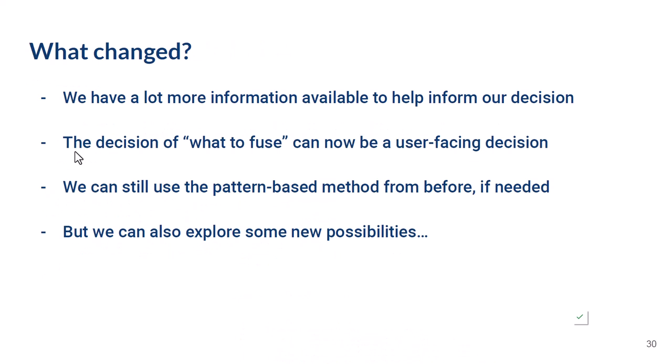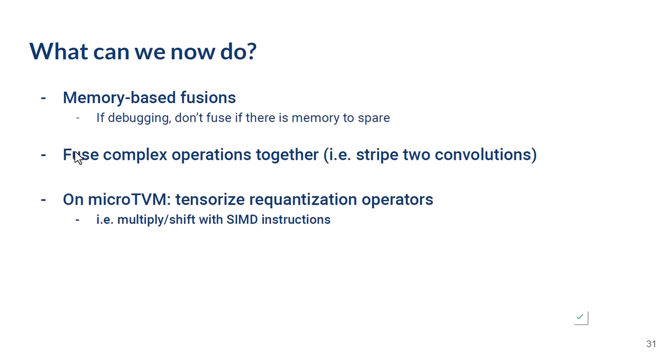What's changed now that we have Relax? At every step of the compilation pipeline, passes have a lot more information to inform their decisions. In the fusion case, the decision of what to fuse can now be a user-facing decision — it could be implemented by an accelerator vendor in a way that makes sense for their accelerator. Or we can still fall back on the pattern-based method if needed. We can also explore new possibilities: for example, if we're debugging a fused operator and think one of three things fused together is broken, we can now selectively decide not to fuse certain operators to help with debugging — something previously impossible because you couldn't know total memory pressure at fusion decision time in Relay.